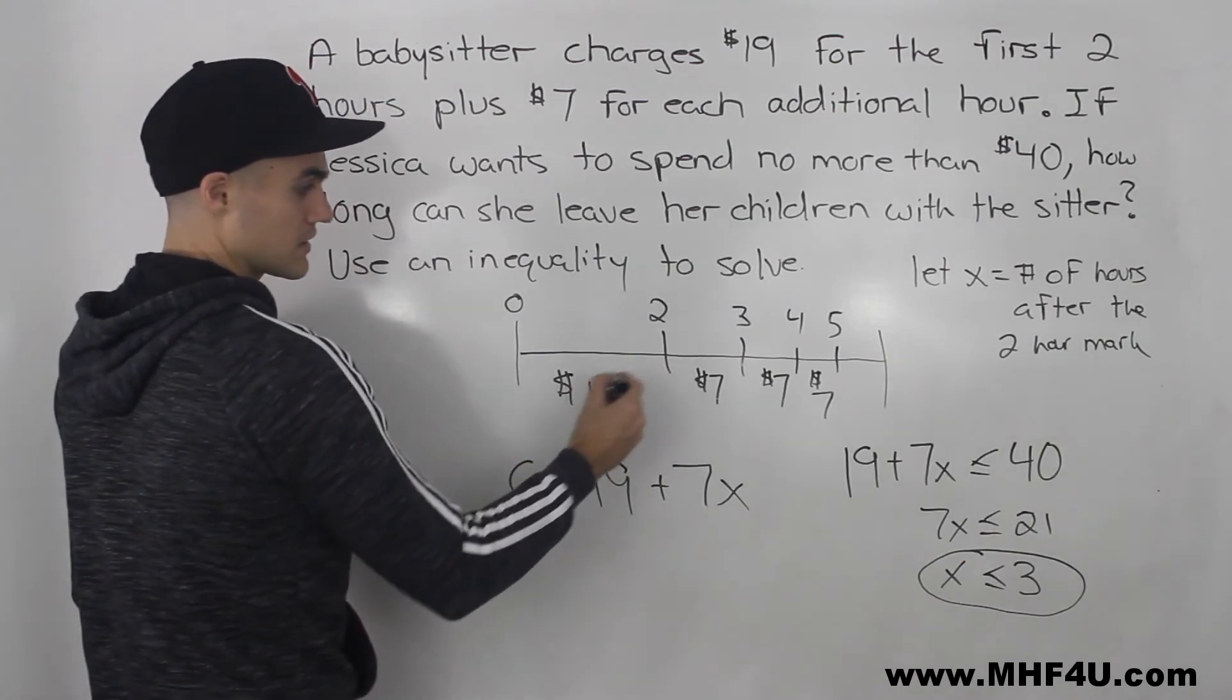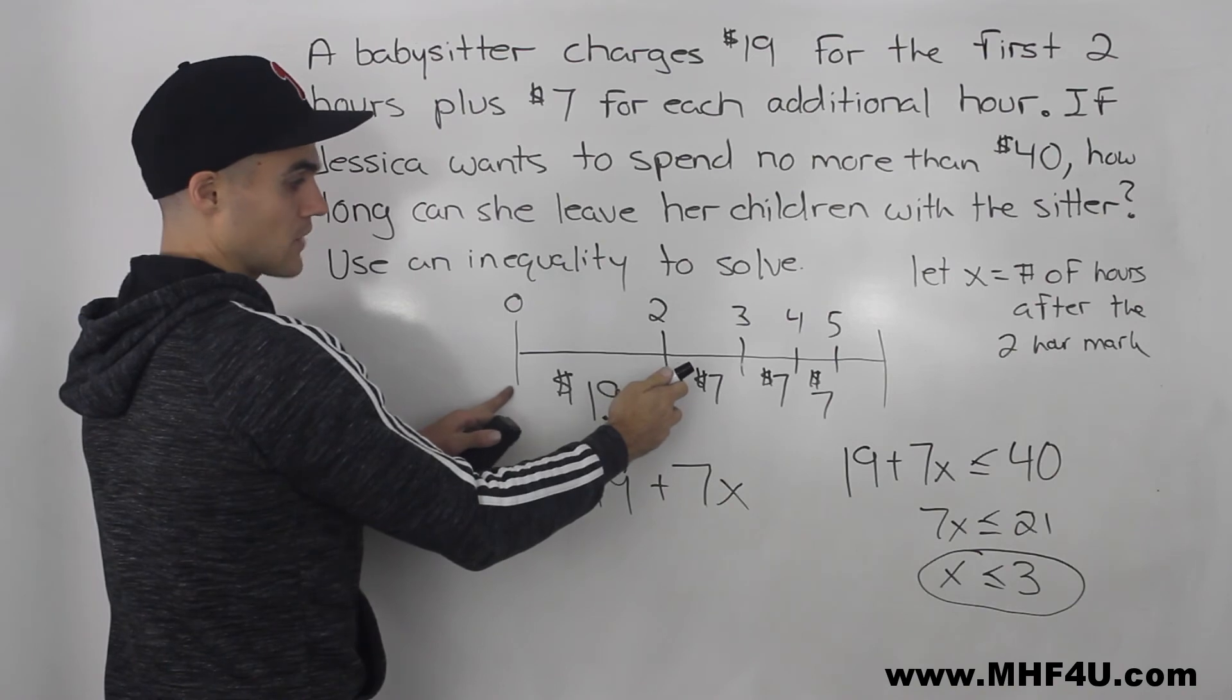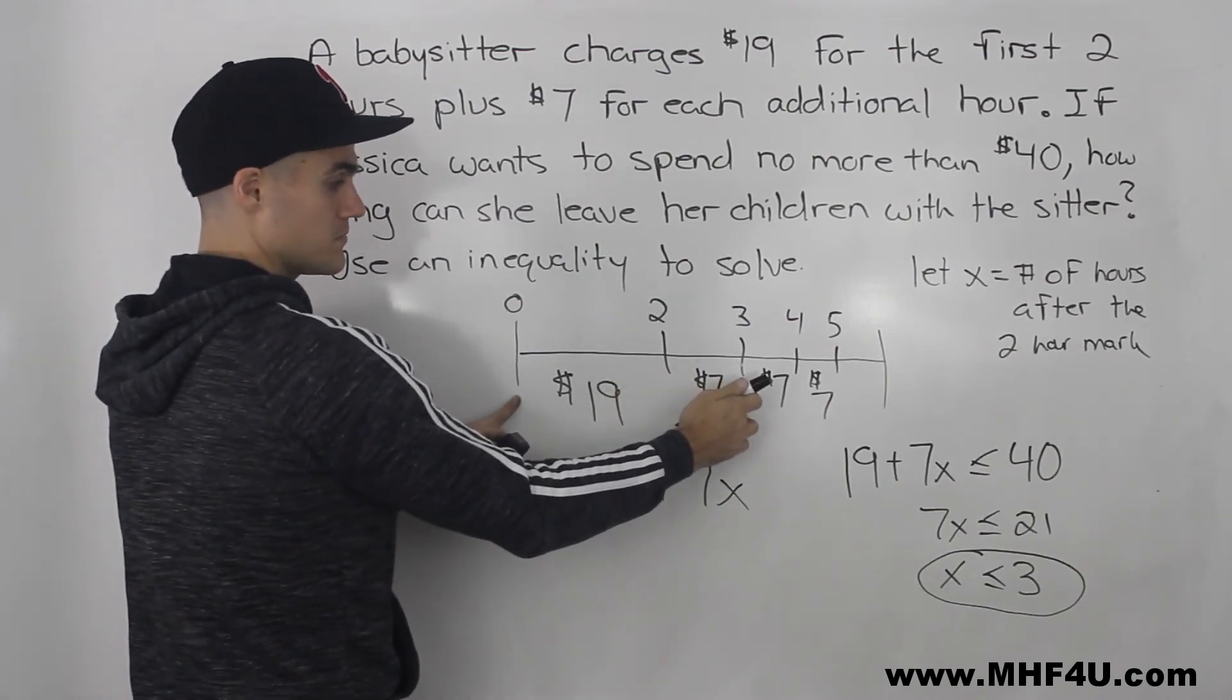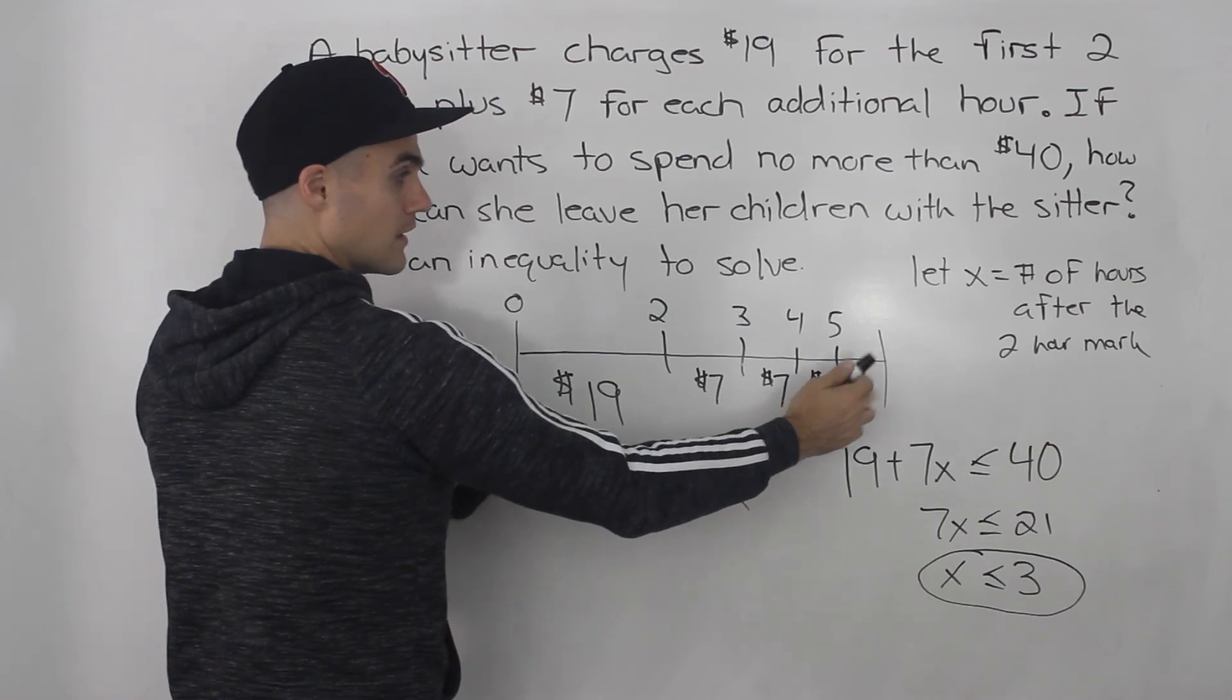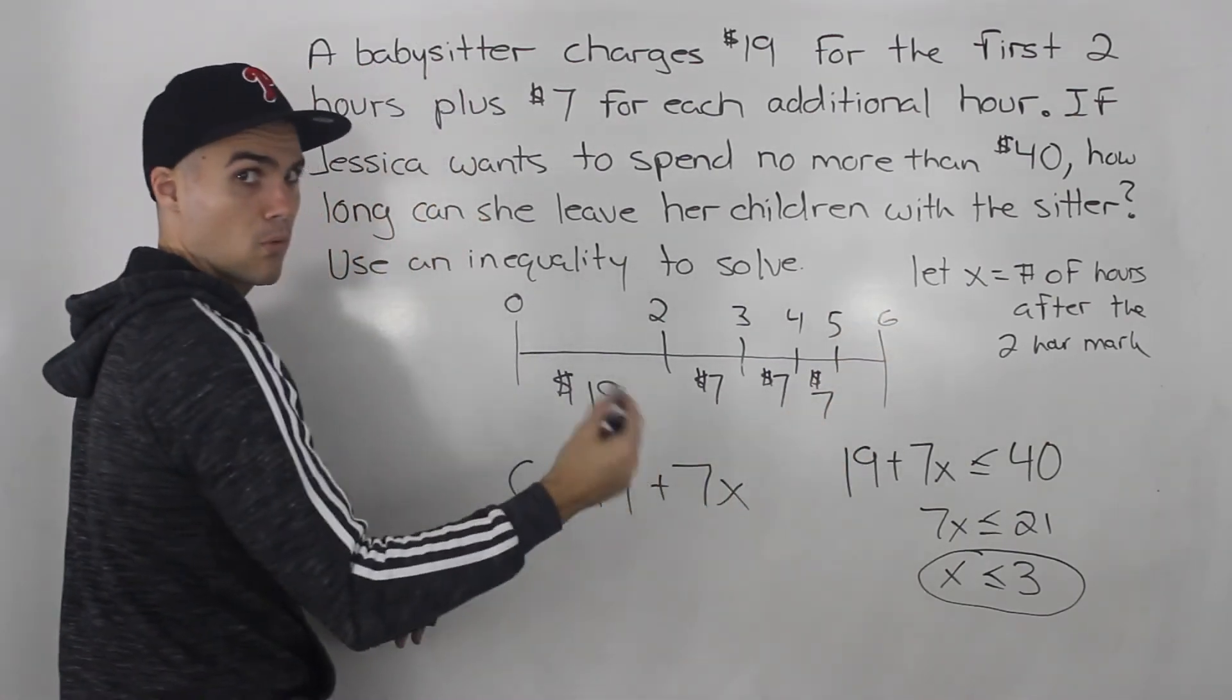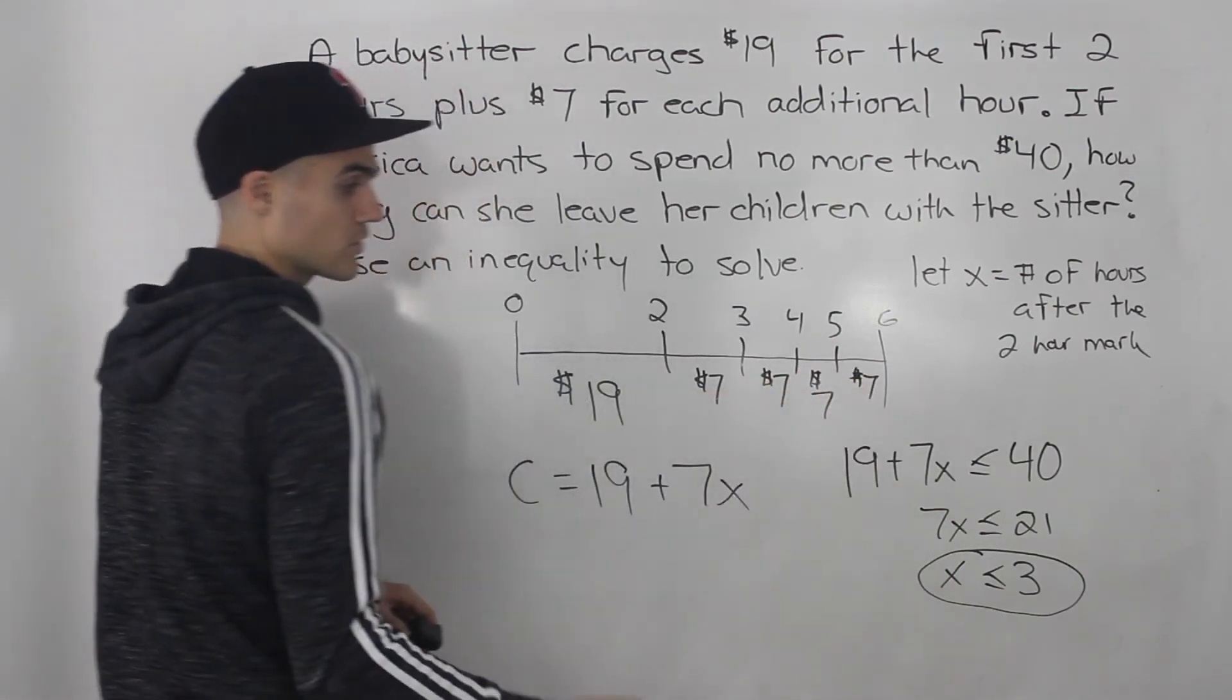Now it makes sense. If she leaves the child with the babysitter for two hours, she gets charged $19. For three hours, it would be $26. For four hours, it would be $33. And then for five hours, it would be $40. And if she wants to go above five hours, she's going to start getting charged more. For six hours, it would be $47.